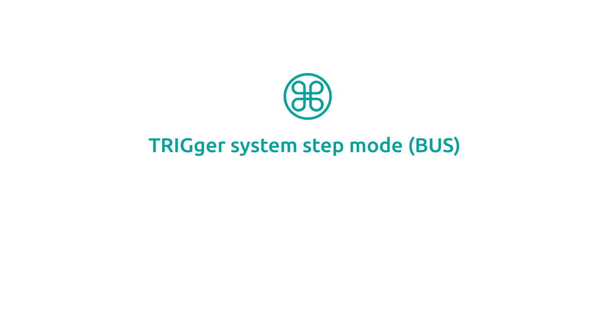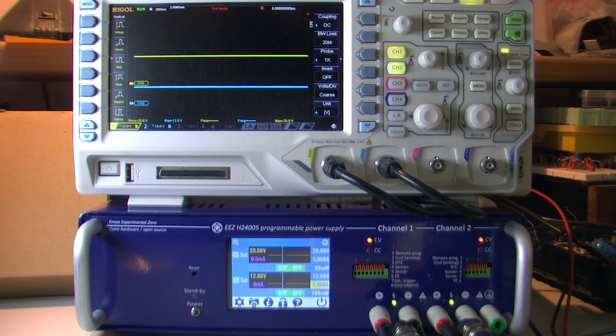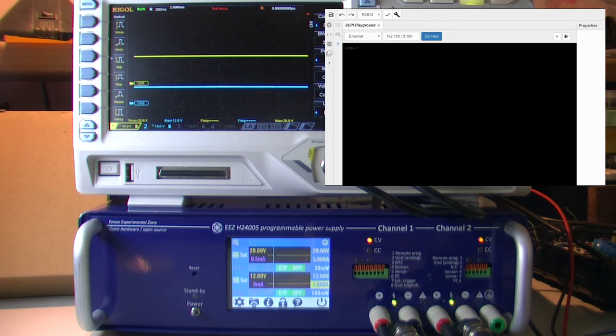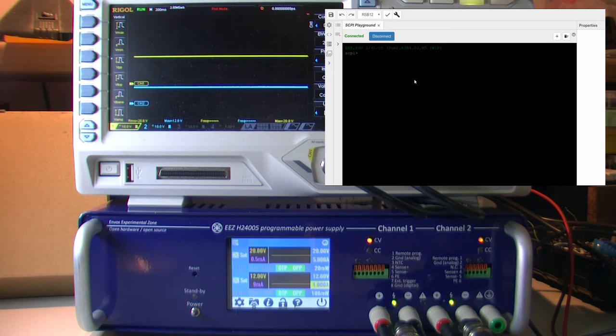If we want to see how bus source works, we will need some SCPI terminal. I'll use EZ Studio SCPI Playground. And make a connection. Here I can check what is the current trigger source. It is manual and I need to change that to bus.